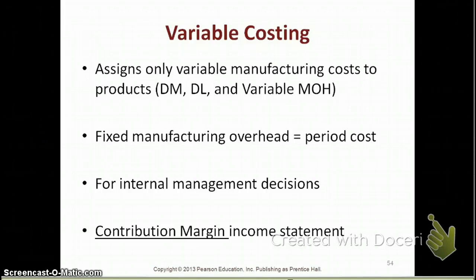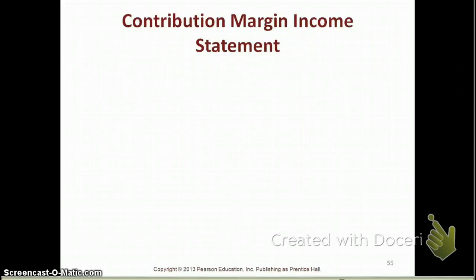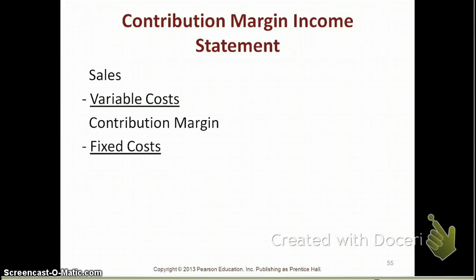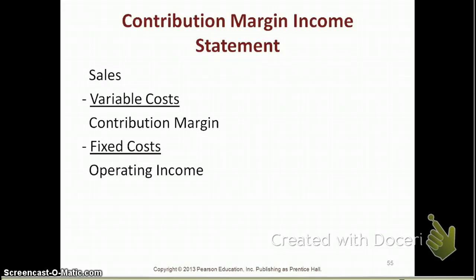When we perform variable costing, we prepare what we call a contribution margin income statement. We start off with sales, then subtract our variable costs — sales minus variable costs gives us our contribution margin. From contribution margin, we subtract our fixed costs, and that gives us our operating income. So the formula is: sales minus variable costs equals contribution margin, and contribution margin minus fixed costs equals operating income.